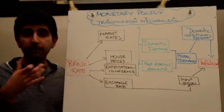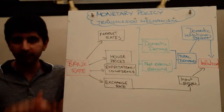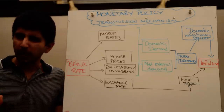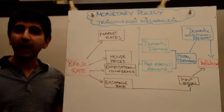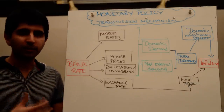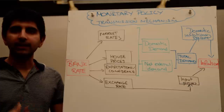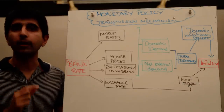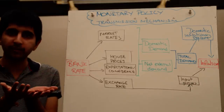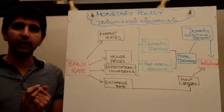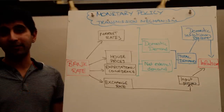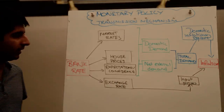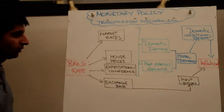Interest rates have a direct impact on house prices. If interest rates are cut, ceteris paribus, there will be more demand for housing and more demand for mortgages, given that monthly mortgage repayments will be lower. This pushes up the price of housing, pushing up confidence in the economy and possibly facilitating more spending as a result. Vice versa for a rise in interest rates.